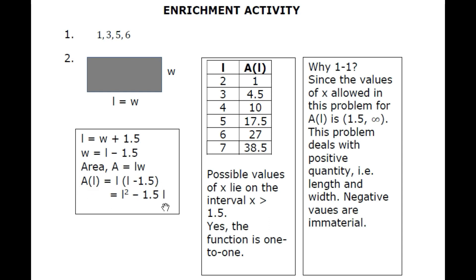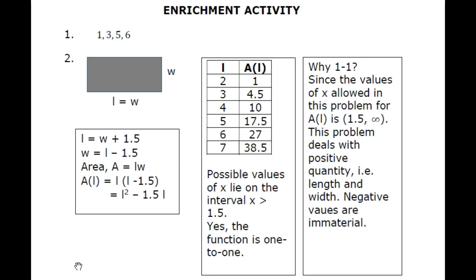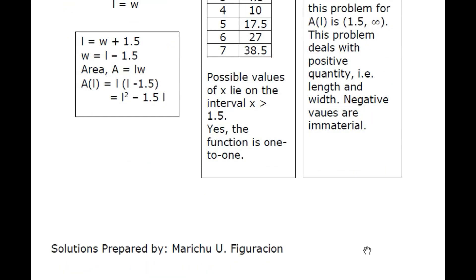Although it is a quadratic function whose graph is a parabola, and normally that would not be one-to-one, I am firm that this is a one-to-one function since we are dealing with positive quantities — the length and the width. We cannot take 0 or negative values for this area because it is nonsensical in a real-life context. When dealing with real-life situations, values must be positive. Hope you liked this video. This is Teacher Marichu saying: always stay happy, healthy, and safe. Thank you. God bless.